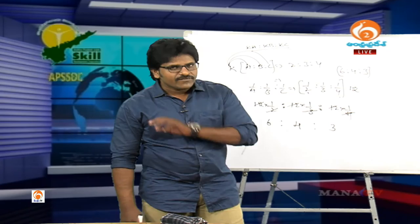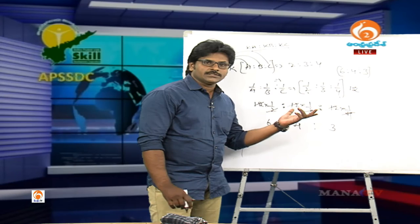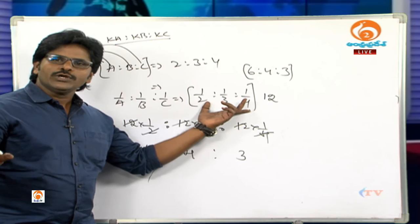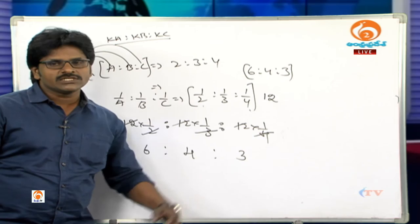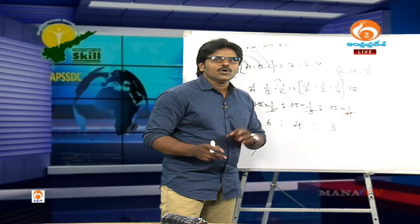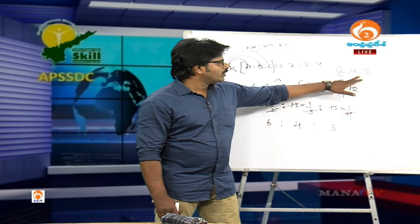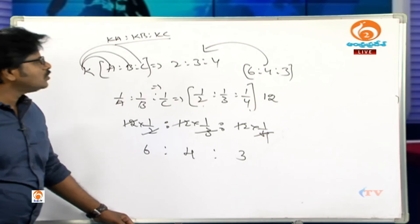For two-term ratios, the inverse is straightforward: inverse of 4 is to 3 is 3 is to 4. For more than two terms, find the LCM of all denominators when expressed as 1/A is to 1/B is to 1/C, then multiply the entire ratio by that LCM to convert fractions into integers. The ratio remains unchanged since multiplying by a constant preserves it.